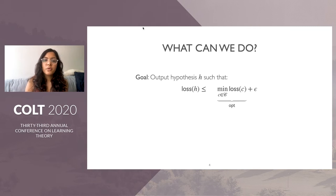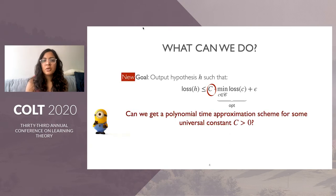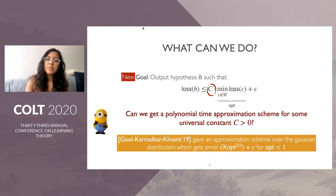Recall our goal was to output a hypothesis competitive with the best hypothesis loss opt up to additive error epsilon. What if we relax this to some constant times opt plus epsilon? Can we design a polynomial time approximation scheme for some universal constant C? A hint comes from work by Goyal, Karmalkar and Clivance showing that outputting opt^(2/3) is achievable in polynomial time.